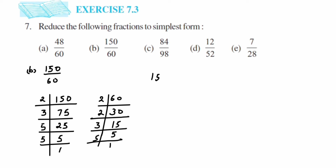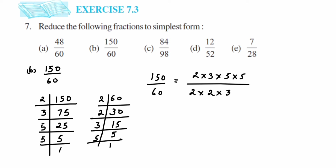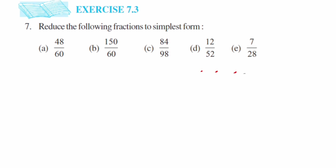Now write down the factors in place of 150 and 60 and cancel the common factors. For 150 we have 2 × 3 × 5 × 5, and for 60 we have 2 × 2 × 3 × 5. Cancel one 2, one 3, and one 5. Left over in the numerator is 5 and in the denominator is 2. So the answer is 5/2. If it's lengthy, you can use the cancellation method, cancelling the zeros or in the 3 table.